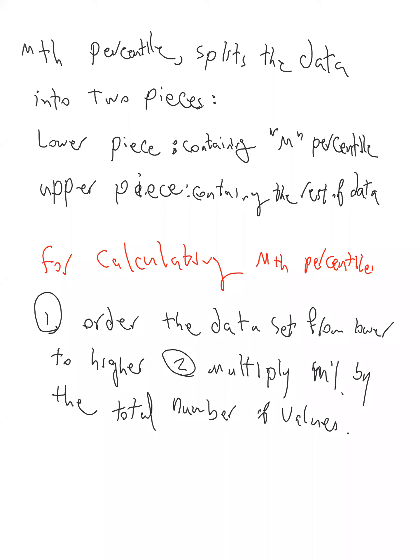So one point is that when we want to find the M's percentile of a data set, this M's percentile splits the data into two pieces. First piece is the lower piece, which contains M percentile. M is a number. The upper piece, which contains the rest of the data.